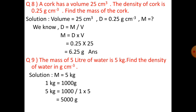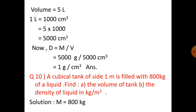Mass equals 5000 grams. Volume is given as 5 liters, which we need to convert into cubic centimeters. We know that 1 liter equals 1000 cubic centimeters, so 5 liters equals 5000 cubic centimeters. Now density equals m divided by v, that is 5000 grams divided by 5000 cubic centimeters, which equals 1 gram per cubic centimeter.